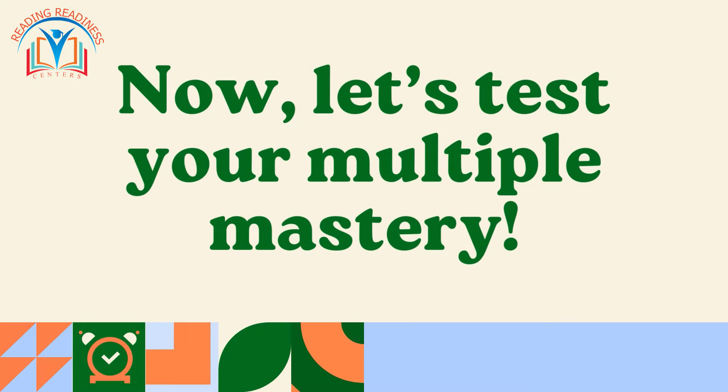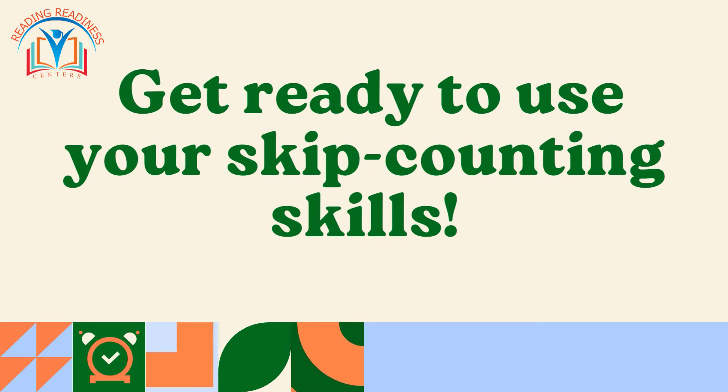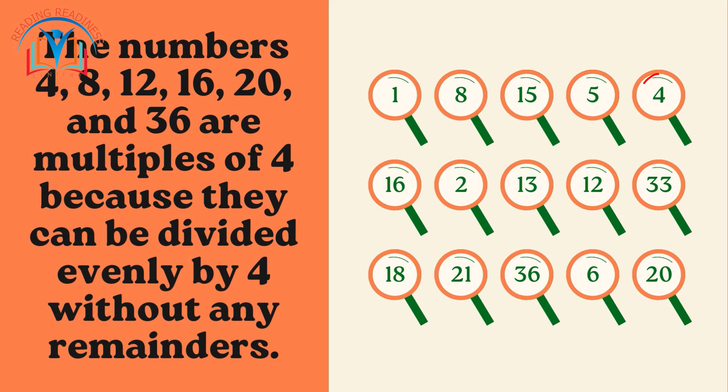Now, let's test your multiple mastery. Which of these numbers are sneaky multiples of 4? Hint: a multiple is a product of a given number and any whole number. Get ready to use your skip counting skills. The numbers 4, 8, 12, 16, 20, and 36 are multiples of 4 because they can be divided evenly by 4 without any remainders.